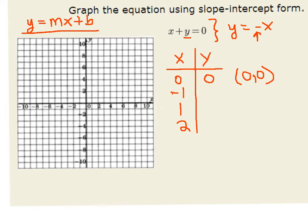When x is negative 1, y equals the opposite of negative 1, which is positive 1. When x equals 1, y would equal negative 1. When x equals 2, y would equal negative 2. So now we've got some points here.